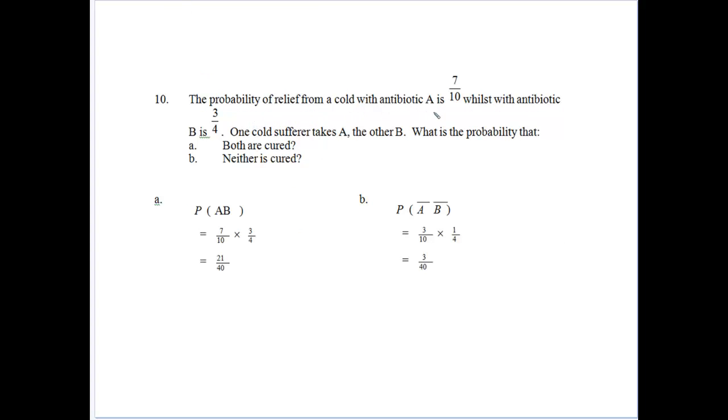The probability of relief from a cold with an antibiotic, with A is seven tenths, and B is three quarters. So one cold sufferer takes A, the other B. What's the probability they're both cured? Well, that's an A and a B. Seven tenths and three quarters. Twenty one on forty. Neither is cured. Well, that'd be the three tenths times a one quarter, which is three fortieths.